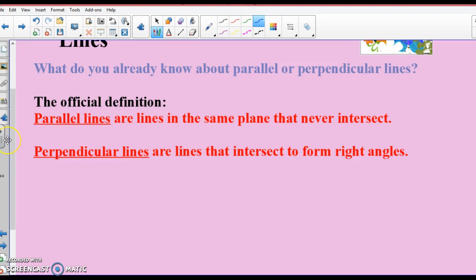Parallel lines are two lines in the same plane that never intersect. A real life example would be train tracks, right? Train tracks. They never intersect, because if they do, you have a problem.